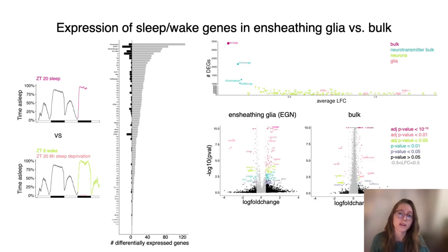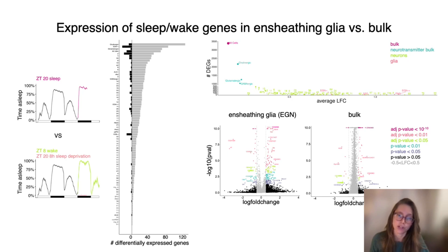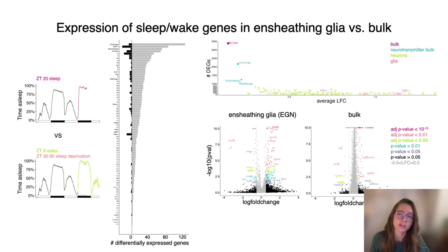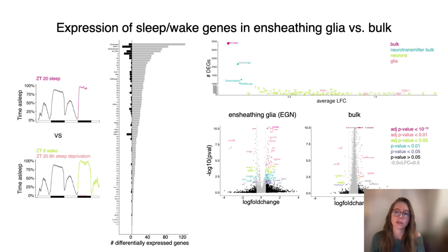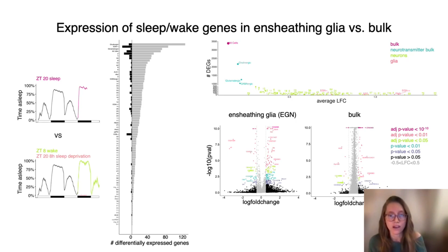If we zoom in on the n-sheathing glia compared to the bulk sample on a volcano plot — with the p-value on the y-axis and the log fold change on the x-axis — it becomes clear that there are many more differentially expressed genes with higher log fold change in the n-sheathing glia compared to the bulk sample. This confirms that to identify sleep-wake related genes, we need to look at a homogeneous cell population instead of the entirety of a heterogeneous brain that averages out all the differences.